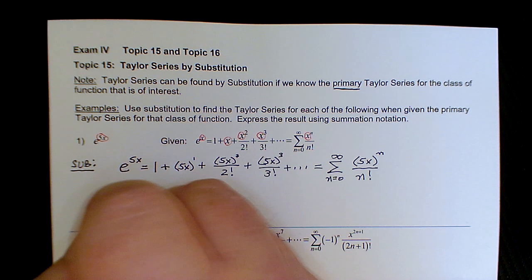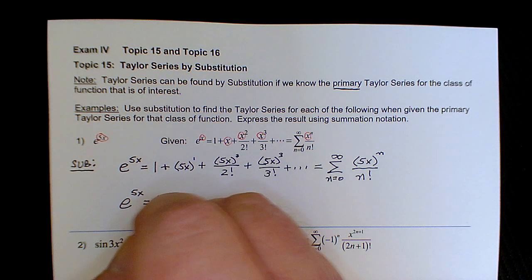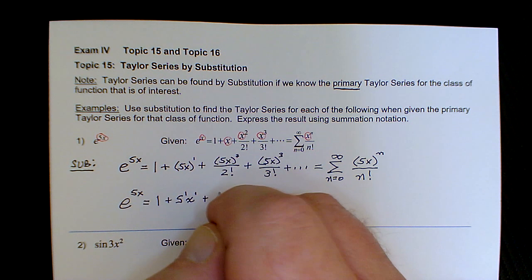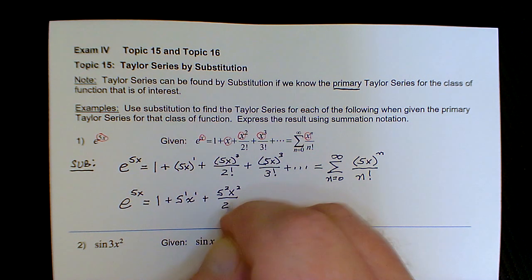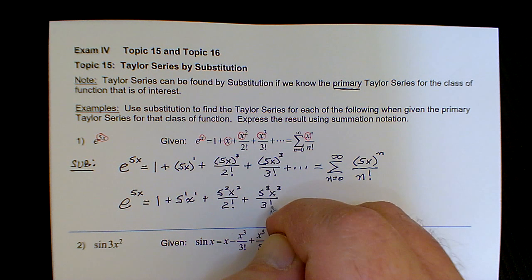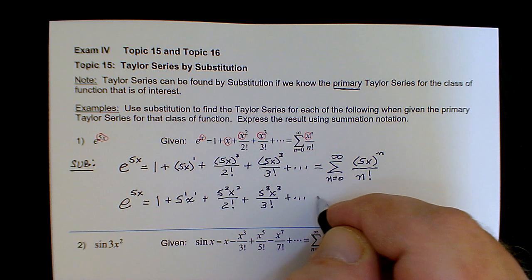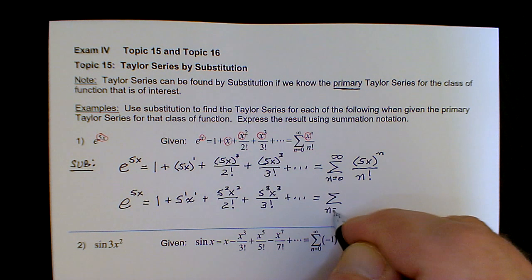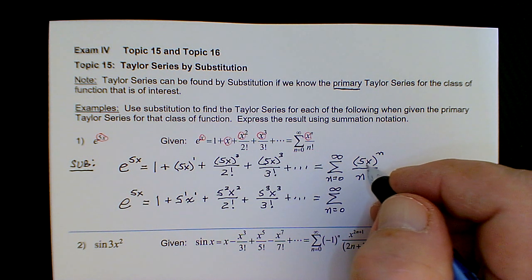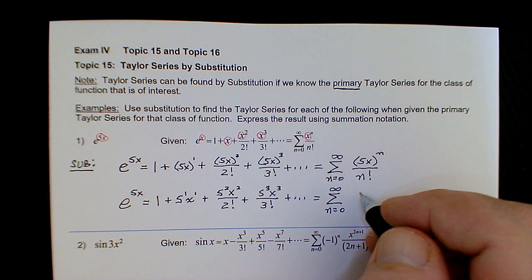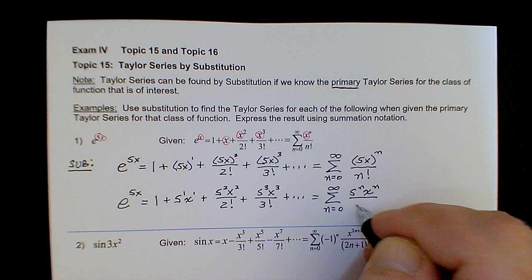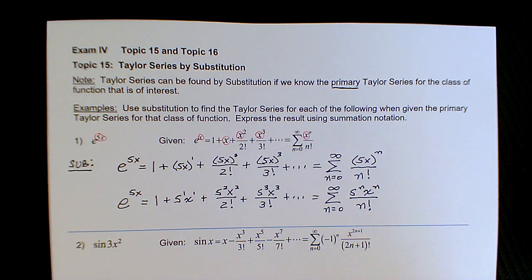We might want to simplify that. We write this as 5 to the first x to the first, plus 5 squared x squared over 2 factorial, plus 5 cubed x cubed over 3 factorial, and so on. In summation notation, exercising the power property, we write this as the sum as n goes from 0 to infinity of 5 to the nth times x to the nth over n factorial. So that would be all there is to it.